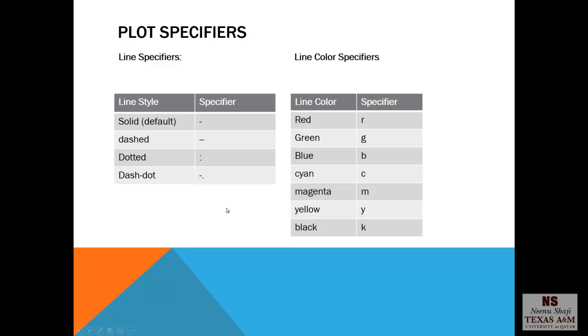We have lots of specifiers available. First is the line specifier. Here we can change the line style. If you want a dashed line, you put a double dash as a string, dotted line, a colon, and dash-dot, you put dash and a dot.